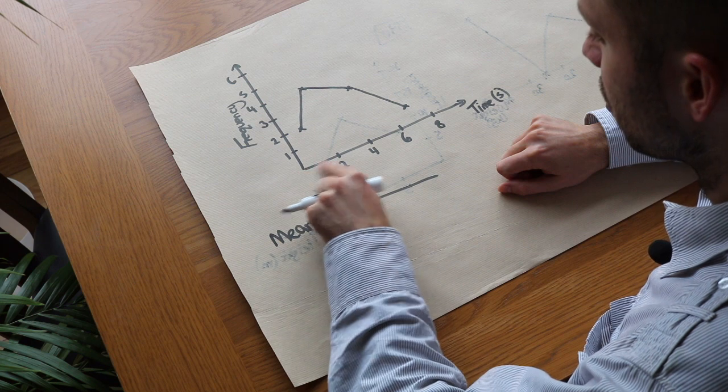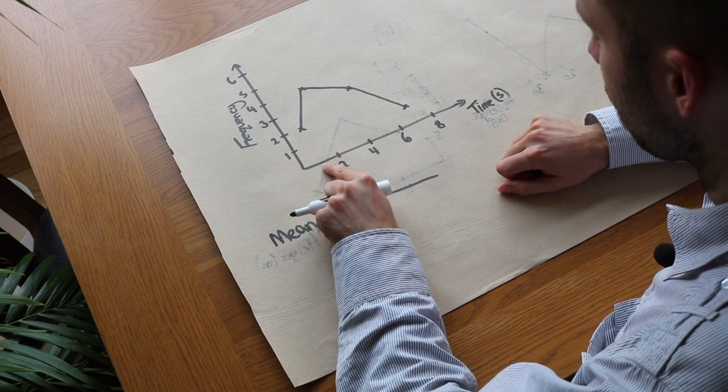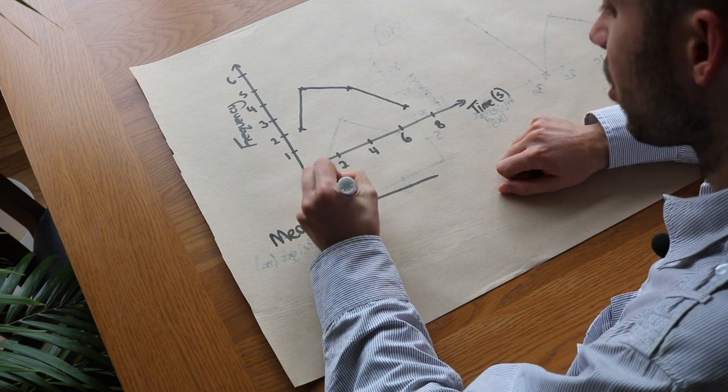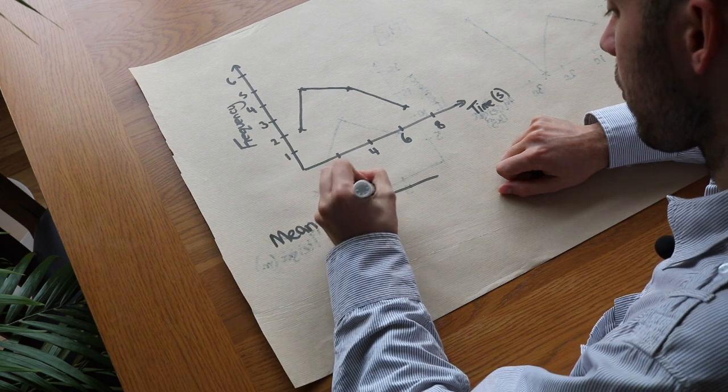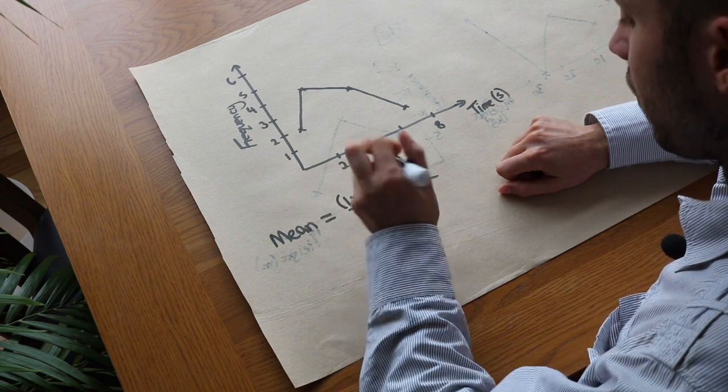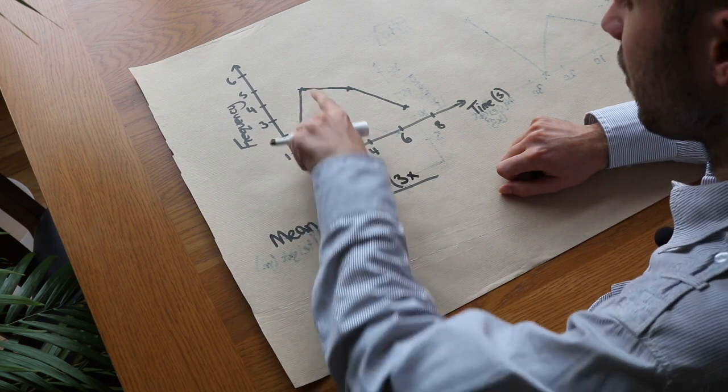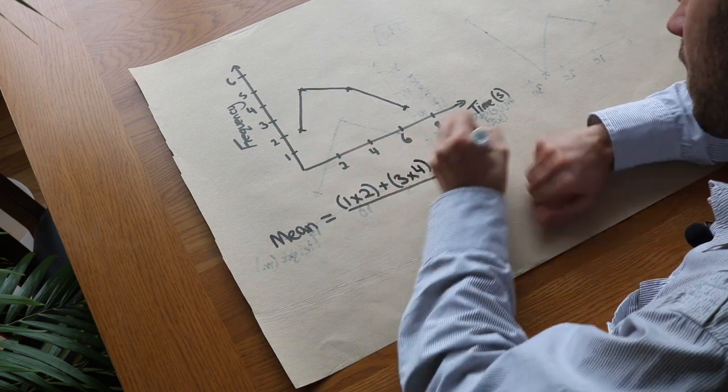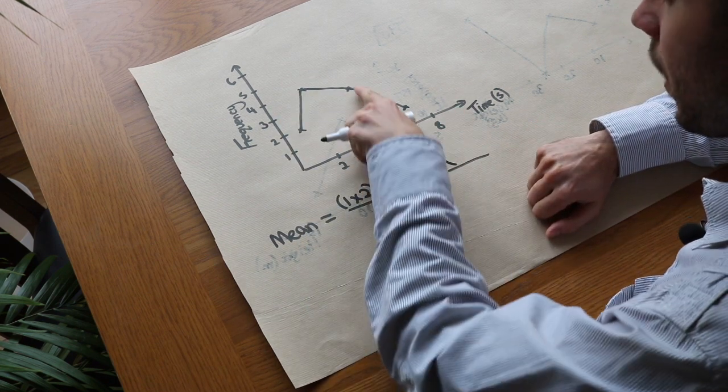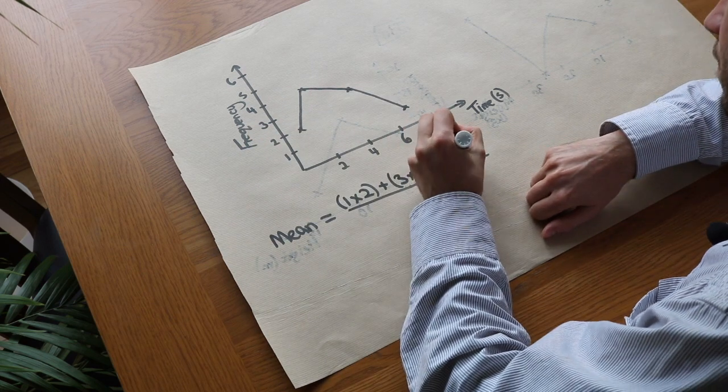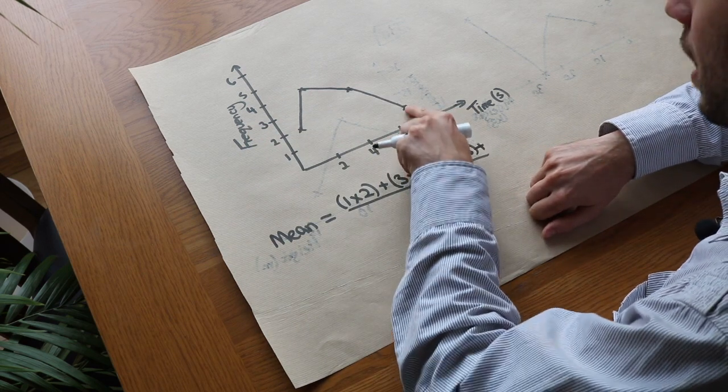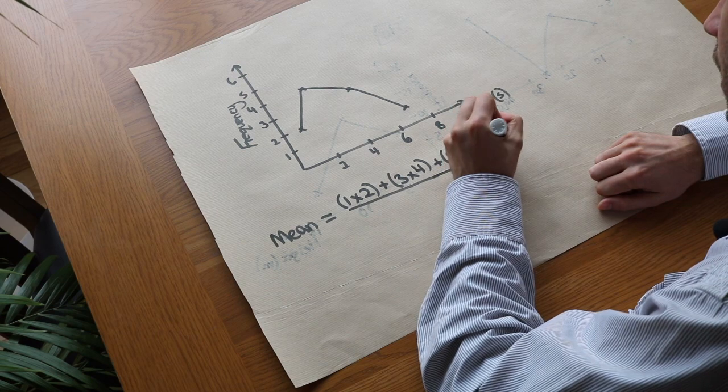So we can do that. We use the midpoint of this 0 to 2 interval which is 1, so we just read off that time there of 1 and do it times the frequency which is 2. Then we add the next midpoint 3 times the frequency of 4, and then we do the next one 5 times 3, and we do the next one 7 times 1.